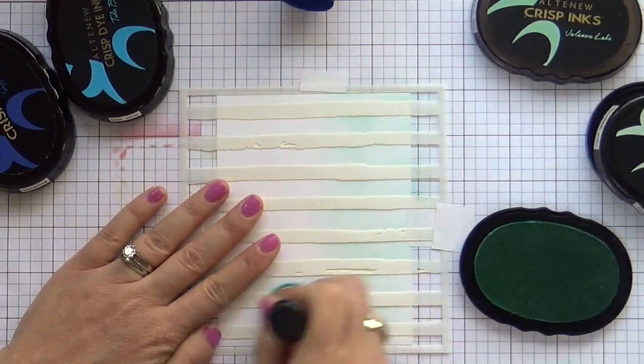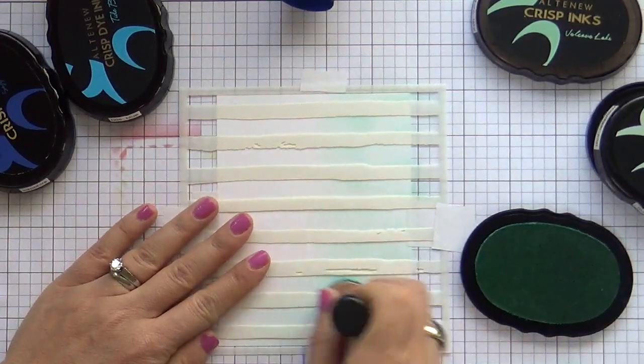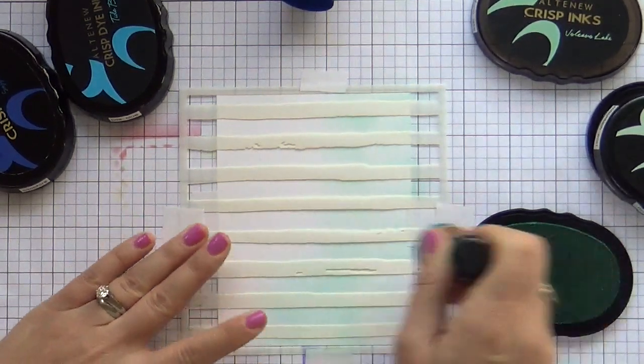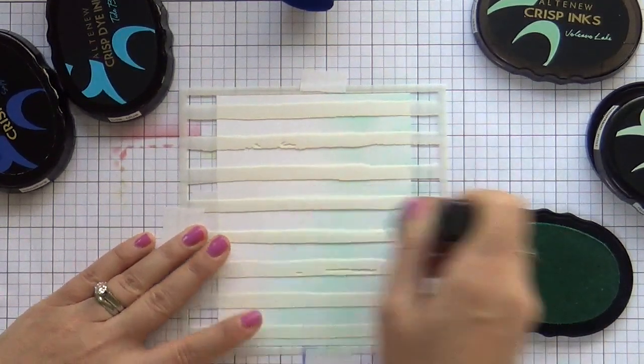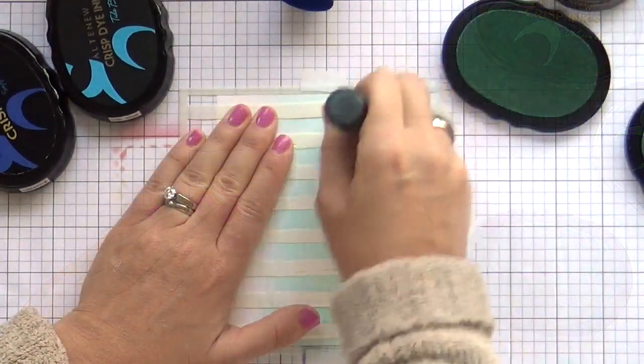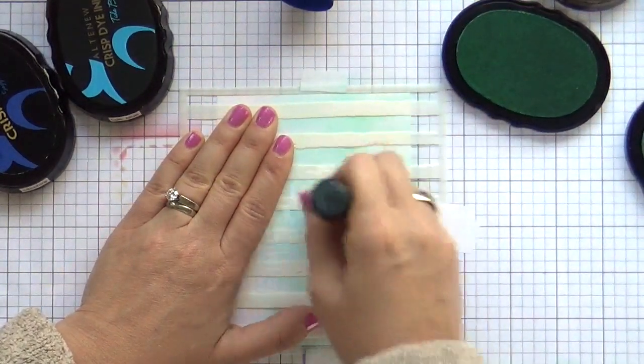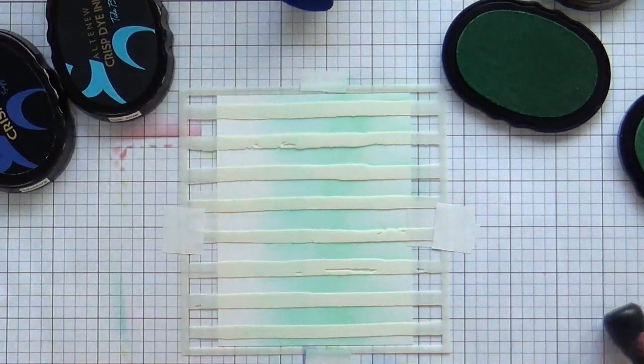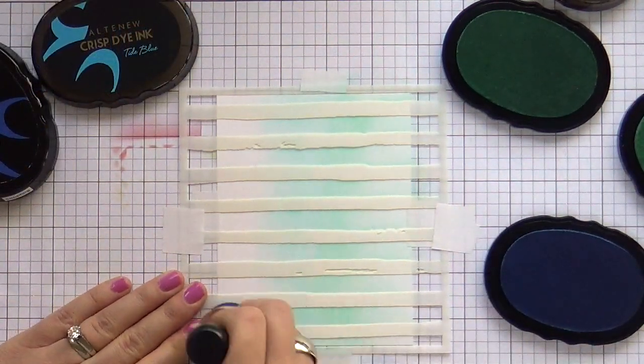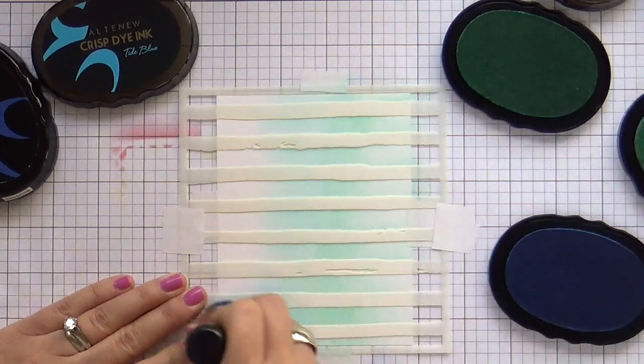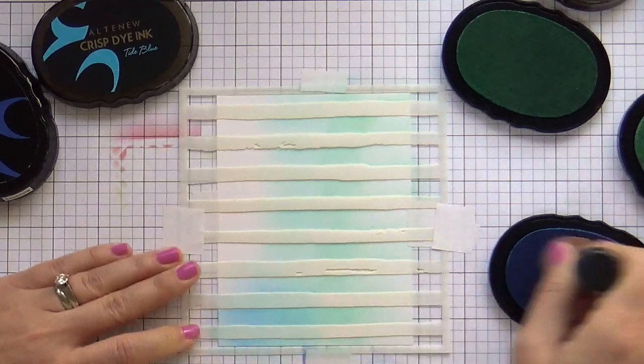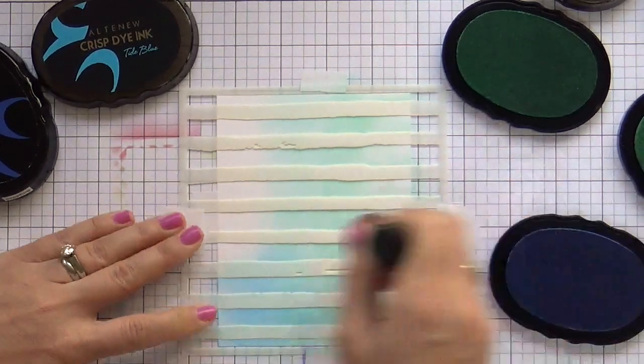So starting with Mountain Mist and then I'm going to work my way darker to the left. Now I'm going in with Volcano Lake, and each time I take a different ink blender. I have about ten ink blender tools and I don't switch out the sponges for different brands. So now I'm working with Altenew, but it doesn't matter to me whether I work with Altenew Distress Inks, Simon Inks, Mama Elephant even. I mix and match pigment, dye, it all works.